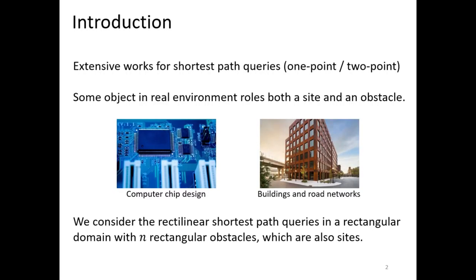There are a lot of works for shortest path queries in polygonal domains, like one-point query with fixed source, or two-arbitrary point query. Most results on one-point query are near linear time, and results on two-point query are near quadratic time, and they assume that the query is a point.